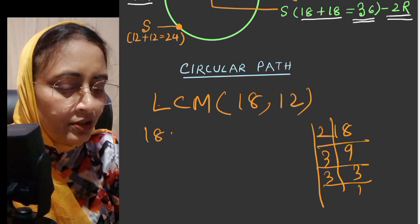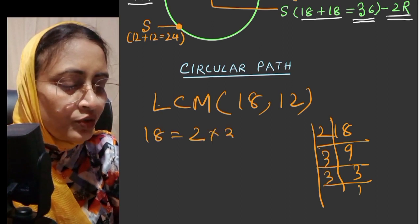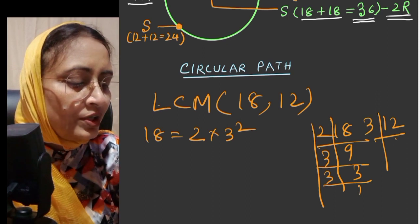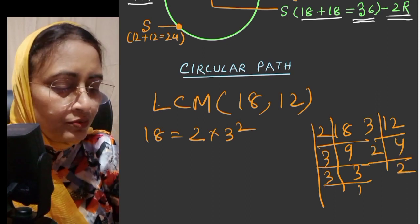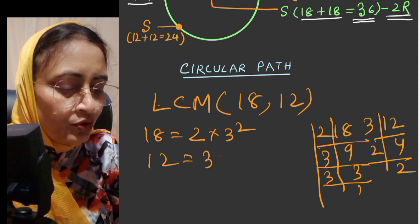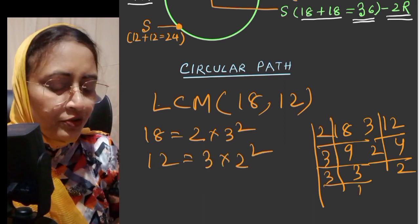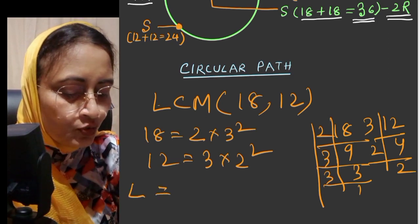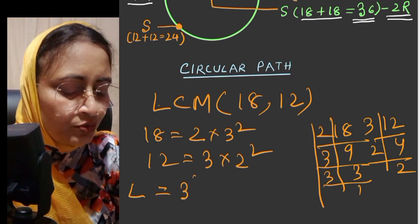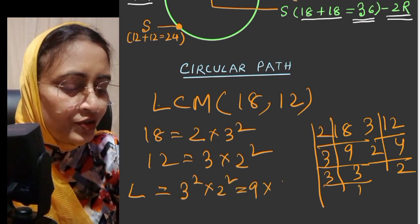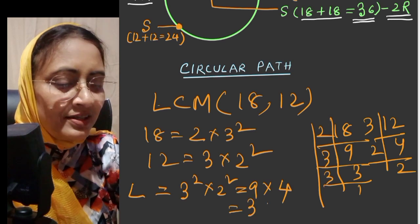18 is equal to 2 into 3 squared, and 12 is equal to 3 into 2 squared. So according to the definition of LCM, LCM is equal to the highest powers: 3 squared into 2 squared, which is equal to 9 into 4, which is equal to 36.